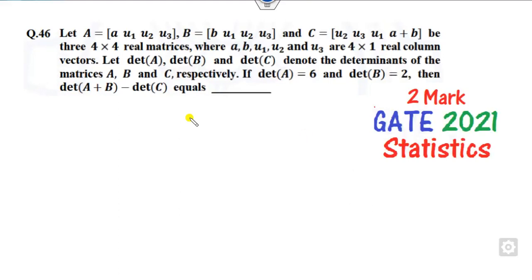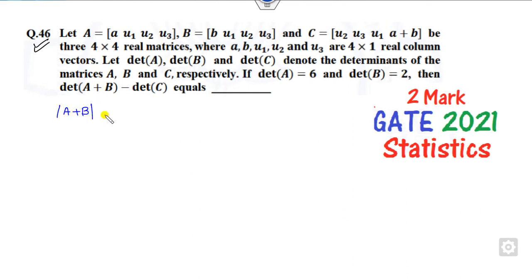Hello everyone, welcome to this next question. This is question number 42, question 46 of the GATE 2021 statistics paper and it is a two-mark question. What you have to find is the determinant of A plus B minus the determinant of C — that is the value you want to find.